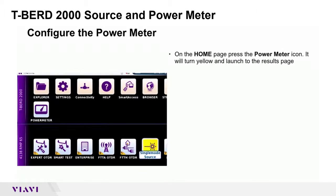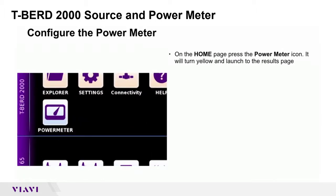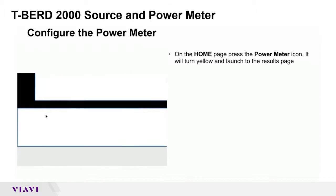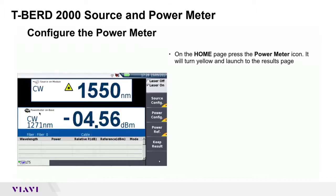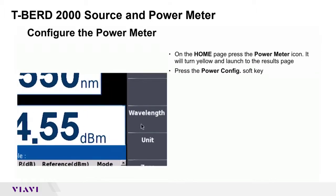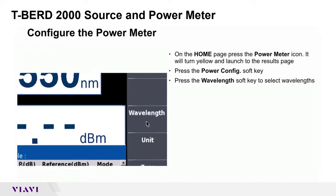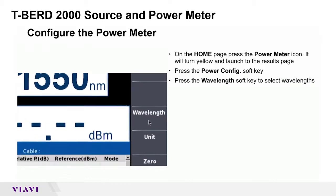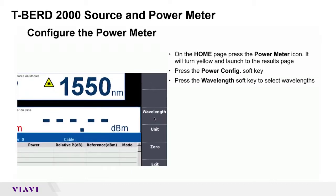On the HOME page, press the power meter icon. It will turn yellow and launch to the results page. Press the Power Config soft key, then press the Wavelength soft key to select wavelengths.